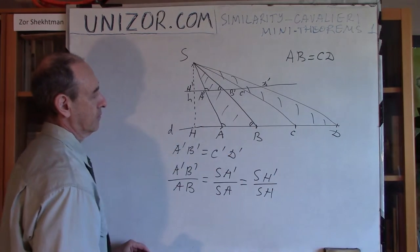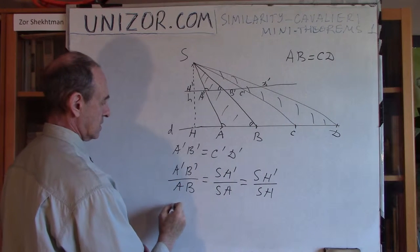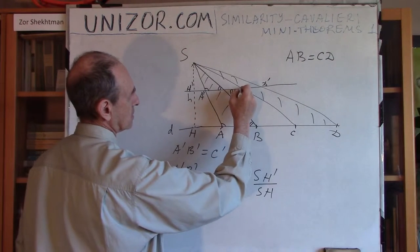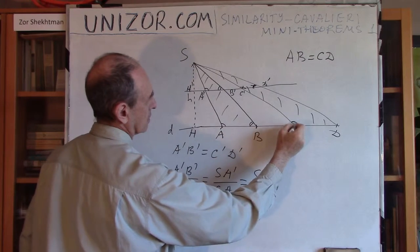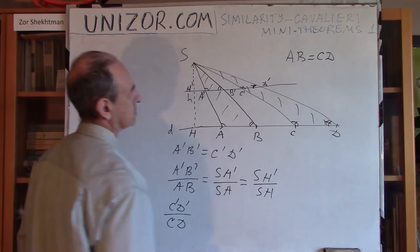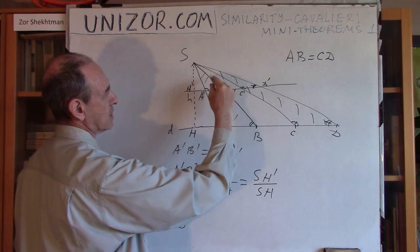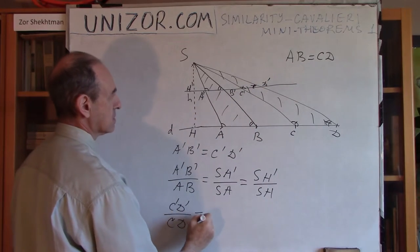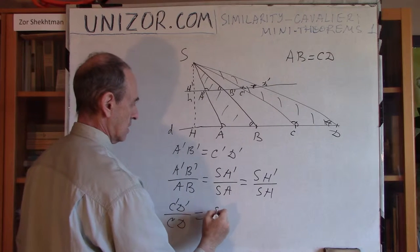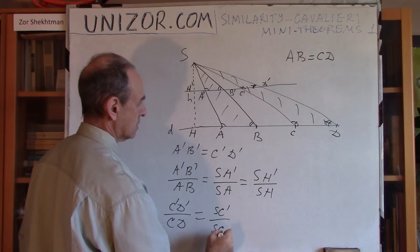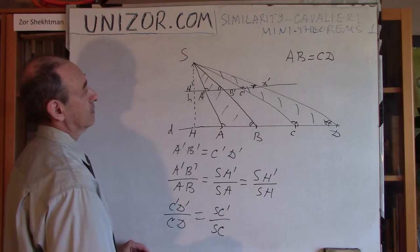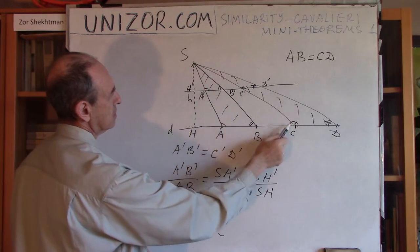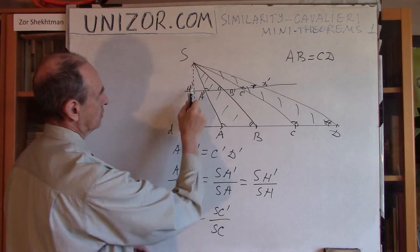Now let's switch to the second triangle. In this triangle, C prime D prime relates to CD because, again, the same angles apply. The triangles S C prime D prime and S C D are similar, so C prime D prime relates to CD as S C prime relates to S C. From the similarity of triangles S H prime C prime and S H C, this ratio equals S H prime over S H — the same ratio as before.